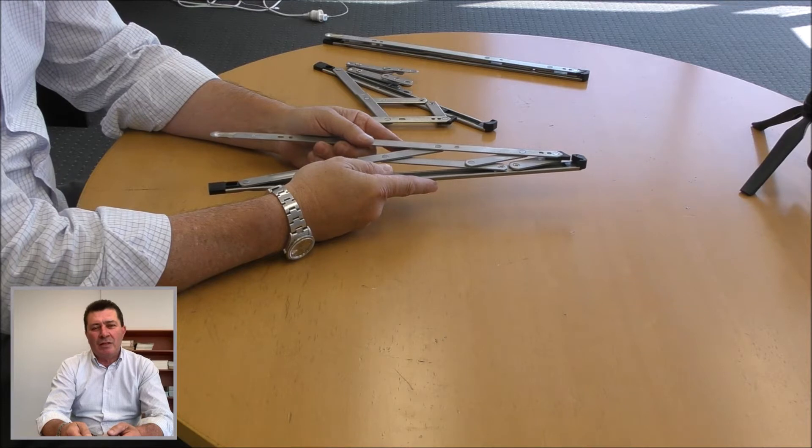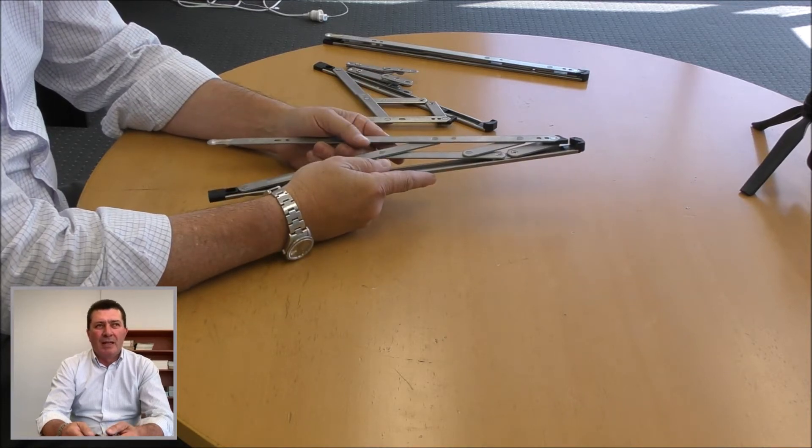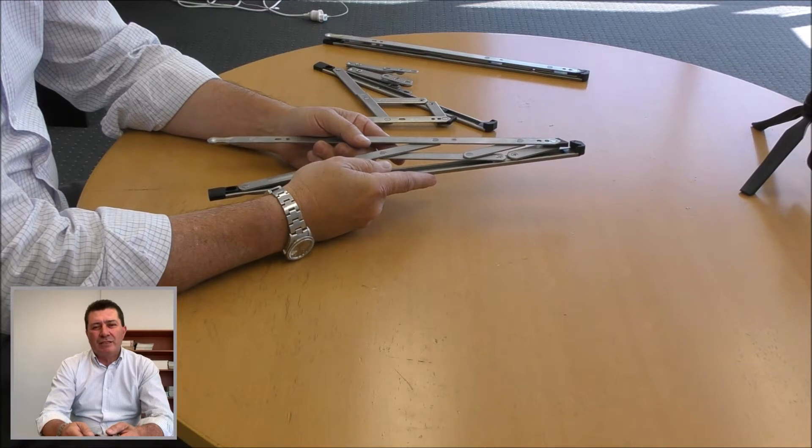The long-standing problem with casement windows is they tend to drop. Now, you have three ways of hinging a casement window.